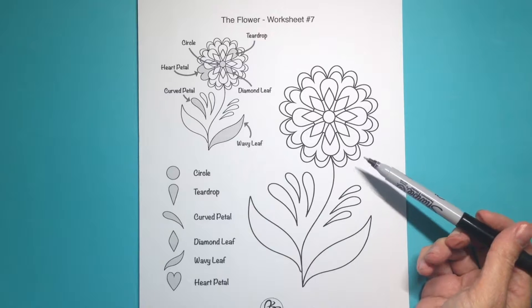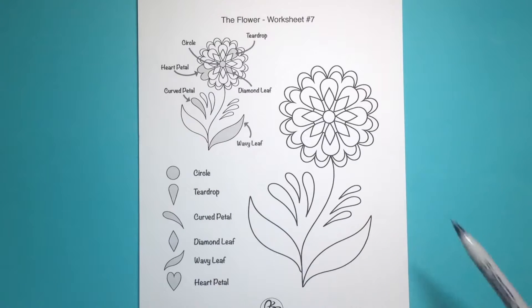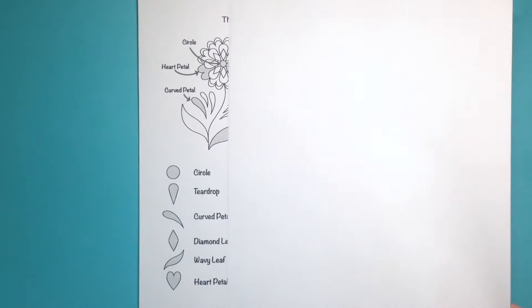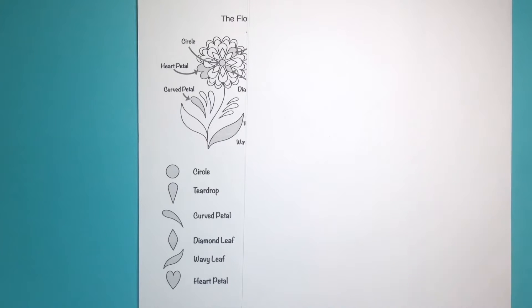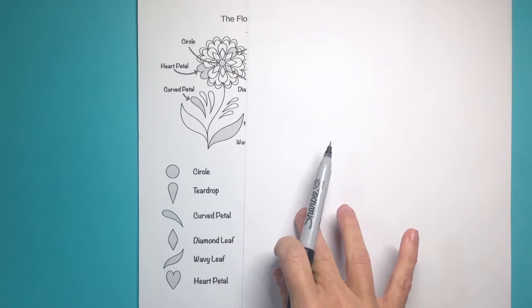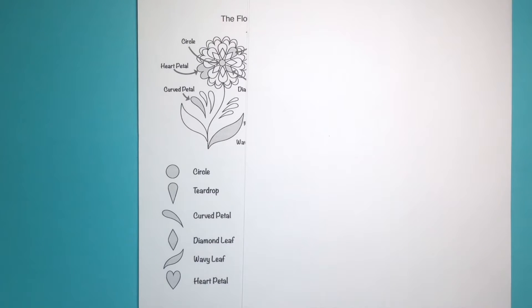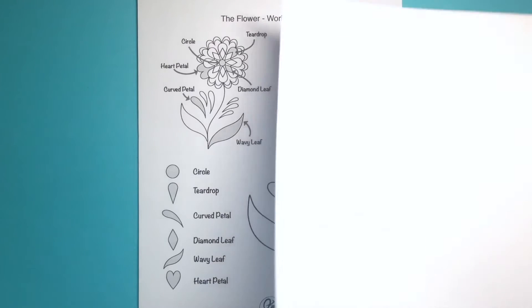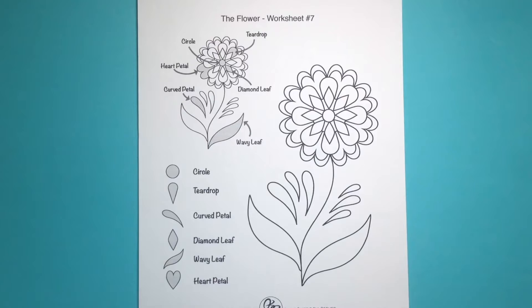Whenever I find myself getting frustrated with a design because it's not working out the way I wanted, or if I'm just plain stuck, I stop, take a breath, come back to these basic shapes that I'm familiar with, and allow it to evolve into something often much better than I had imagined. Keep this worksheet to the side so you can see these shapes right in front of you, and draw your own design and your own flower.